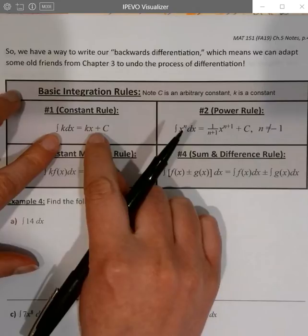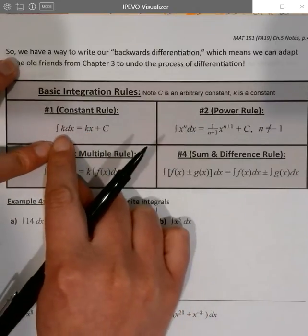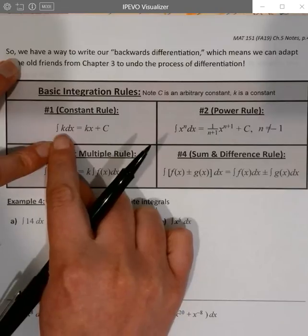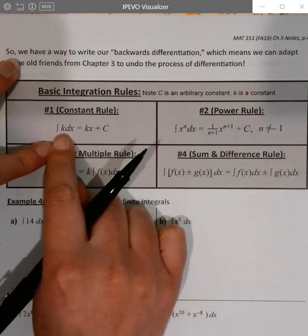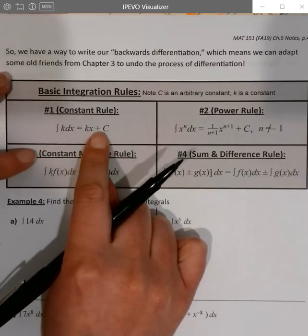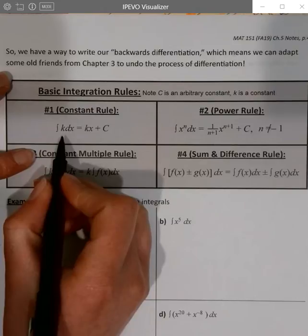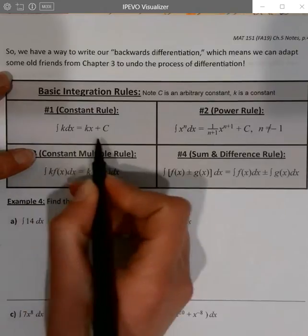So we knew from before that the derivative of a constant times x is a constant, and so now we're just looking at the reverse. If you integrate or anti-differentiate a constant, you should get a constant times x plus some constant. So the integral of k dx is kx plus c.